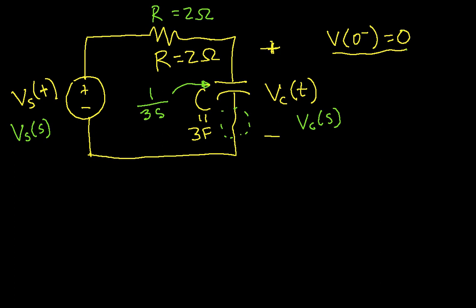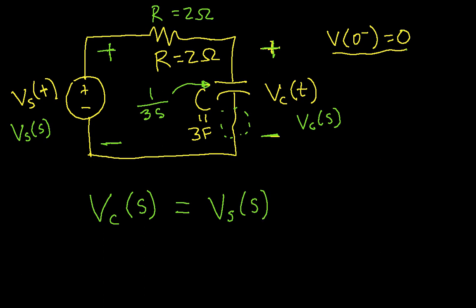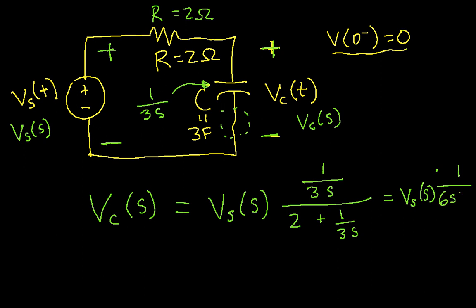To find the voltage across the capacitor, I can use a voltage divider. I have the voltage Vs(S) across the two series elements — a resistor and a capacitor. The voltage divider gives me Vc(S) = Vs(S) times the impedance of the capacitor, which is 1/(3S), divided by the sum of the two impedances: 2 + 1/(3S). Multiplying top and bottom by 3S, this simplifies to Vs(S) times 1/(6S + 1).